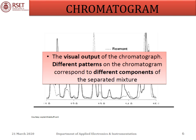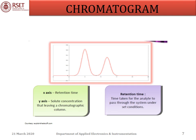The visual output of the chromatograph is the chromatogram. Different patterns on the chromatogram correspond to different components of the separated mixture. In the graph, retention time is plotted on the x-axis and solute concentration leaving the chromatographic column is plotted on the y-axis. Retention time is defined as the time taken for the analyte to pass through the system under set conditions.